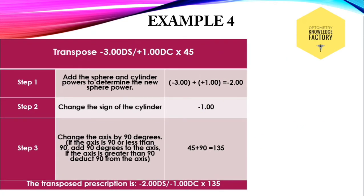Example 4: transpose minus 3 diopter sphere with plus 1 diopter cylinder at 45. Here the spherical component is concave and the cylindrical component is convex. In this condition, we subtract the lower digit from the greater digit: 3 minus 1 is 2 diopter, and we give the sign of the greater digit, which is minus. Minus 2 diopter sphere is the spherical component of the transposed form.